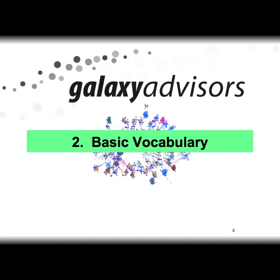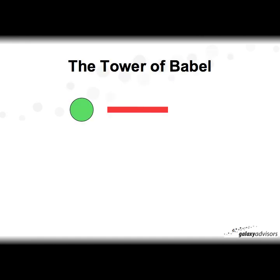Let's take a look at some of the basic vocabulary and concepts that you really need to understand social network analysis and to use Condor quite effectively. Here I have a green circle represented by a node, and a line we call the link. These are the two fundamental elements of social network analysis.